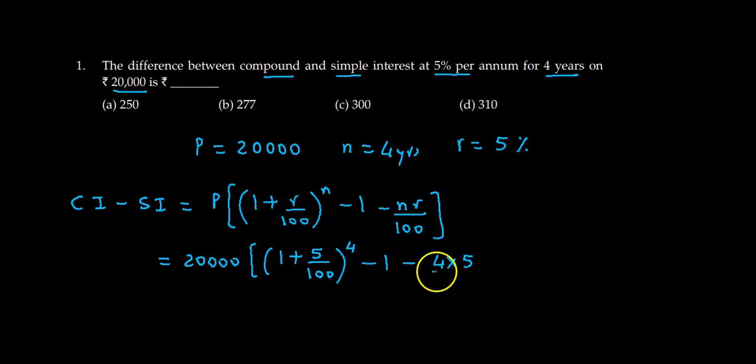So this becomes 20,000 into - this total value is 1.05 raised to 4 minus 1 minus 20 upon 100...